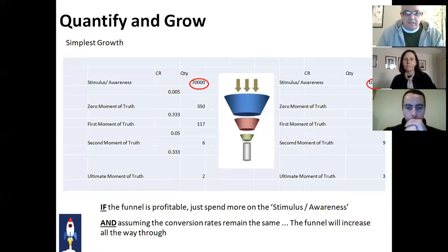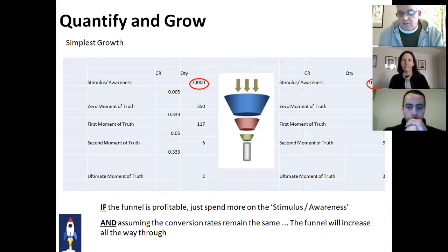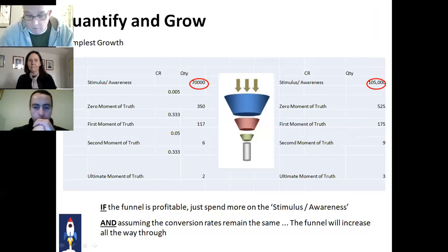If I want to increase my sales by 50% — and assuming this funnel is profitable and the conversion rates at each stage remain the same — if you increase the stimulus and awareness phase, or your reach, by 50%, you should then increase your sales by 50%. It will apply all the way through. If your funnel is profitable and you simply want to make more money and can handle the extra workload, simply increase the amount that goes in the top of the funnel. That's the quickest way you'll grow your sales.